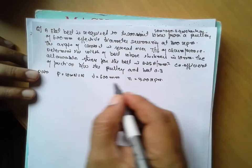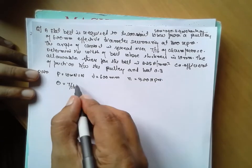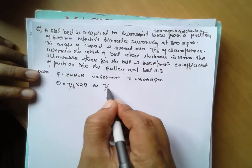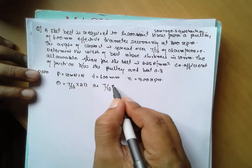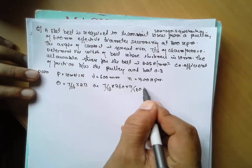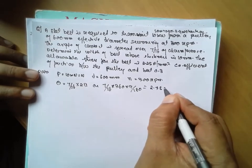Angle of contact theta is given. Theta is 7 by 16 circumference. Either you can go for 2 pi or 7 divided by 16 into 360 into pi by 180, you will get the same answer. It is 2.75 radian.